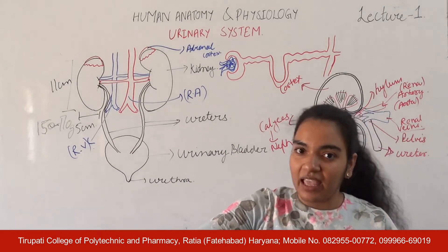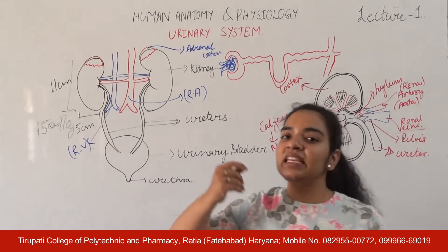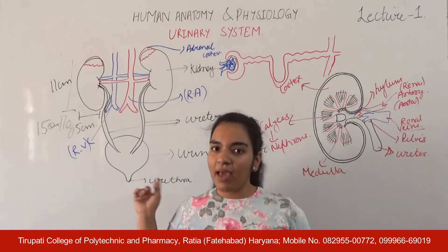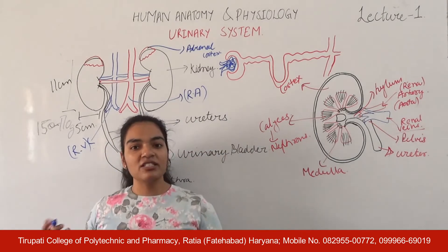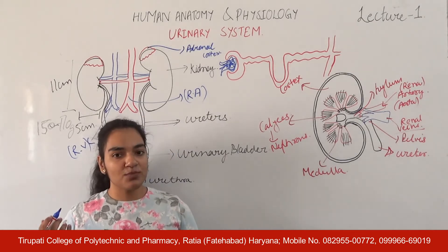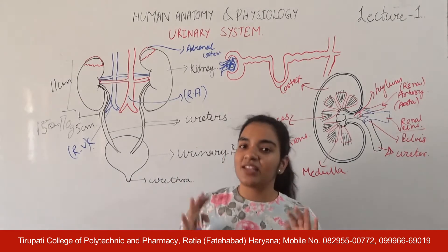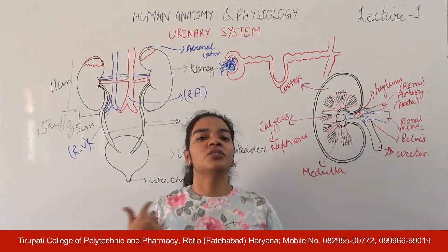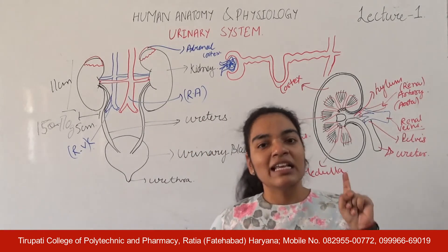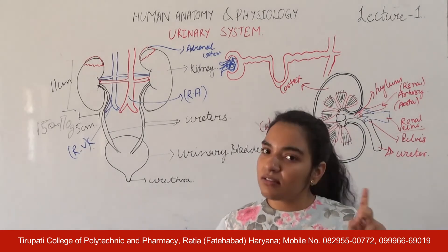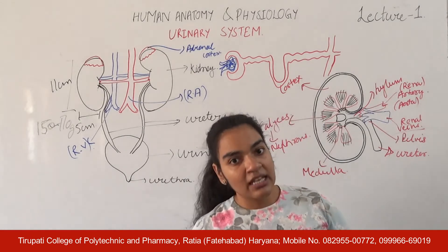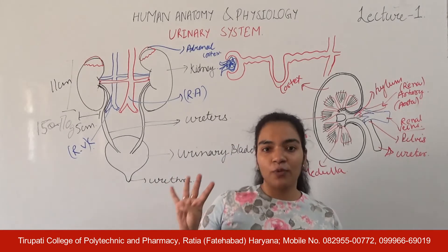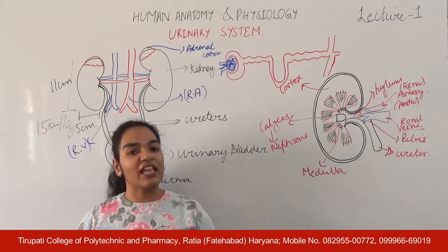Now, what are the functions of the kidneys? First of all, the kidney is responsible for the excretion of water and other waste products. Second, the kidney is also responsible for the excretion of salts. Third, the kidney is also responsible for the excretion of harmful substances like drugs and toxins. Fourth, the kidney is responsible for the regulation of the pH of blood.